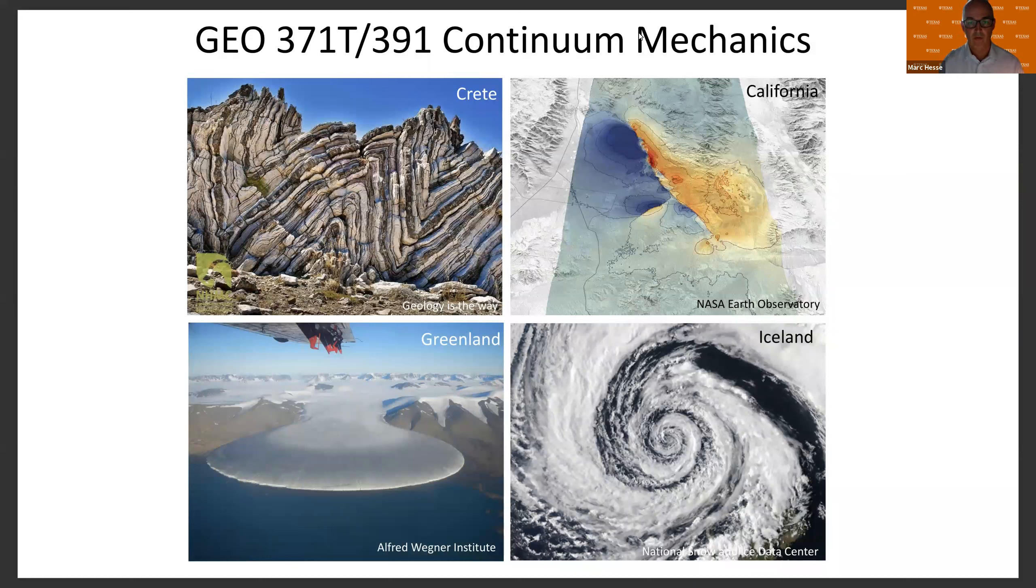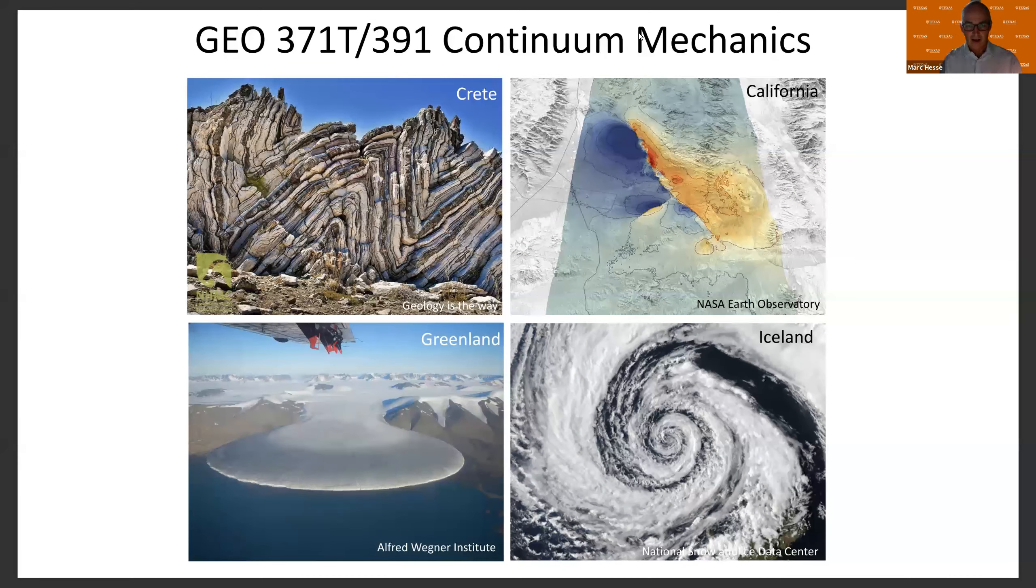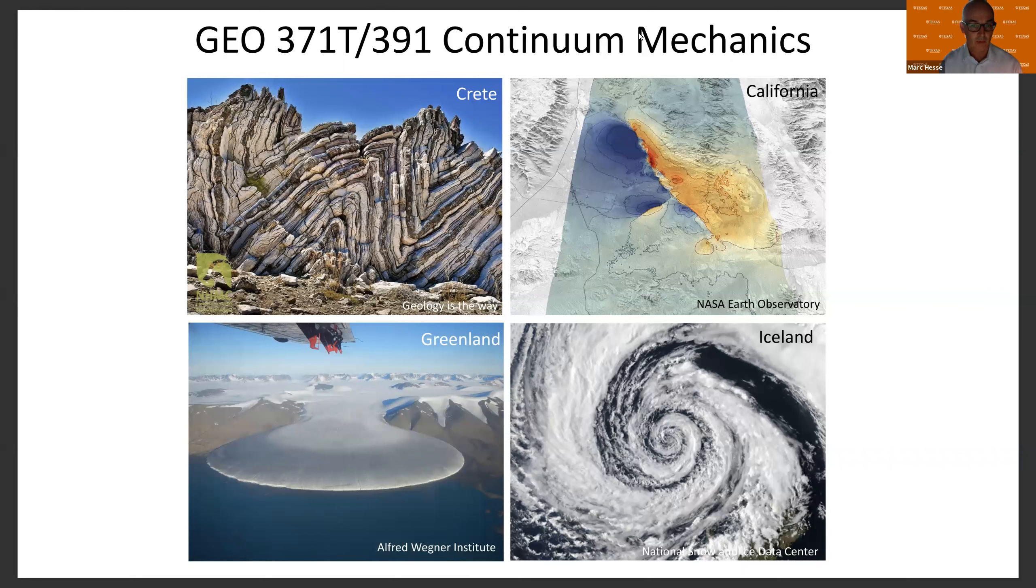I've shown you four pictures from four very different aspects of the geosciences. On the top left, you see a heavily deformed rock. And one of the important things that we need to learn in continuum mechanics is to describe and quantify deformation, something we call strain.